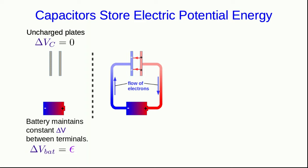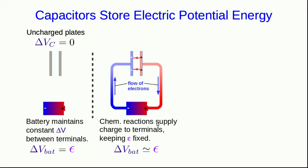A complicated flow of charge happens inside the battery, but in the wires it's much simpler — it's just electrons. Electrons are pulled off of one plate of the capacitor, pulled into the positive terminal of the battery, pushed out the negative terminal of the battery, and onto the other plate, which becomes negative. Throughout this, chemical reactions keep supplying charge to the terminals, keeping the EMF fixed, and as long as the flow of charge through the battery is slow enough, the potential difference across the battery terminals remains equal to the EMF.